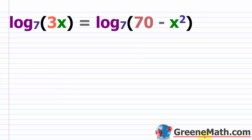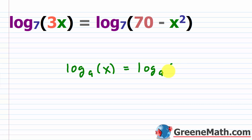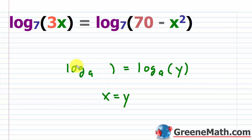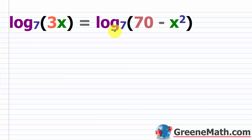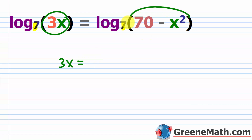Let's take a look at a harder example — it's just a little bit different in the way you solve it. You have a log base 7 on each side of the equation. So if you have log base a of x equals log base a of y, this implies that x equals y. You have a logarithm with the same base on each side set equal to each other, so you can just say x equals y. So we have log base 7 of 3x equals log base 7 of 70 minus x squared. Notice how you have the same base on each side, so you don't need to do anything else other than set 3x equal to 70 minus x squared.